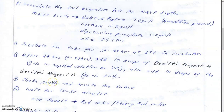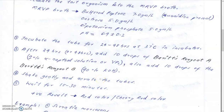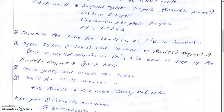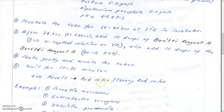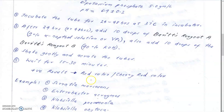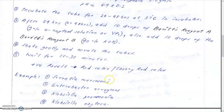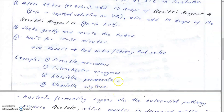Shake gently and aerate the tubes — there will be small bubbles forming in the upper layer. Wait for 15 to 30 minutes; if any color reaction is to be produced it will appear within this time. A positive result is the appearance of a red or cherry red color, known as Voges-Proskauer positive. Examples of VP-positive organisms include Serratia marcescens, Enterobacter aerogenes, Klebsiella pneumoniae, and Klebsiella oxytoca.